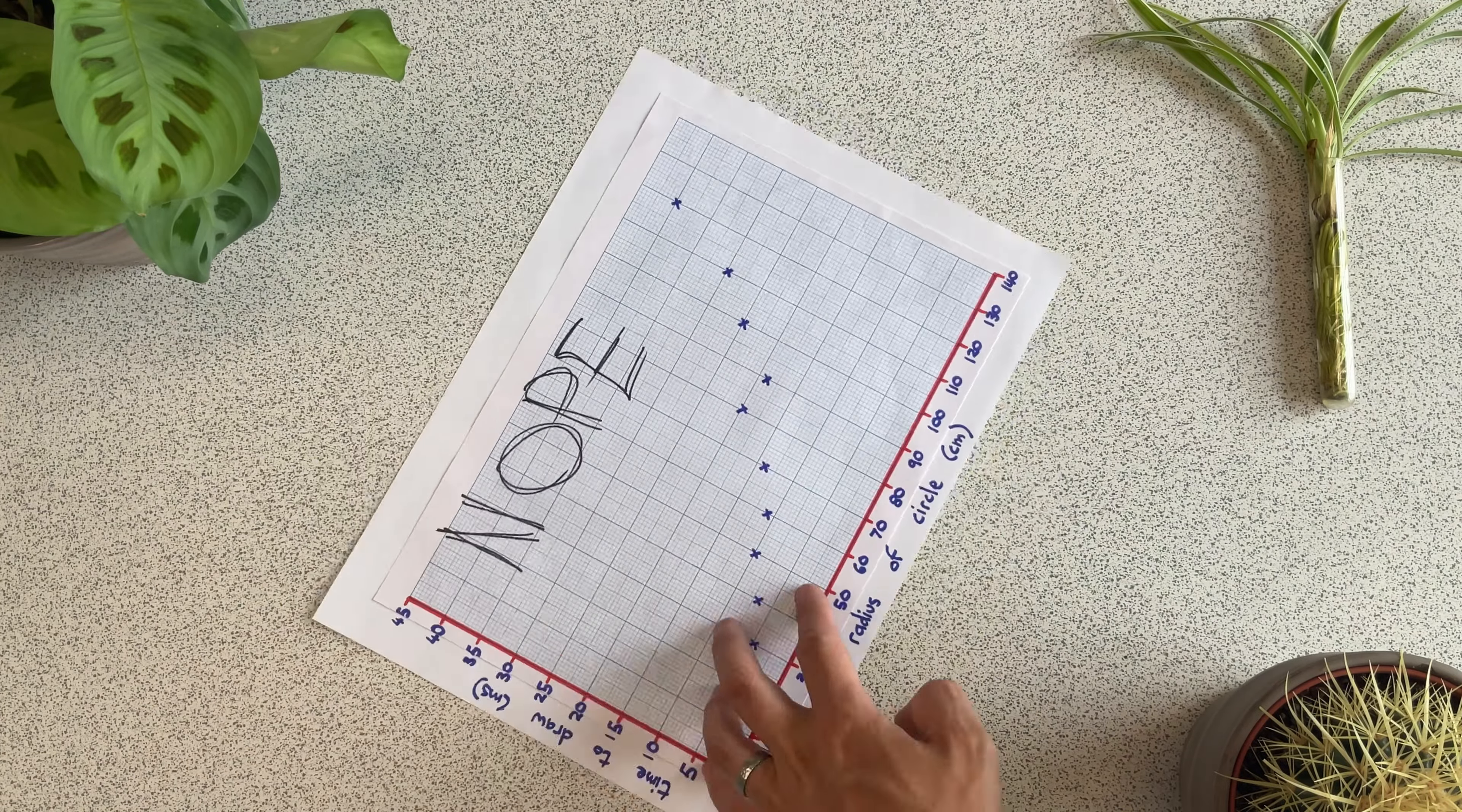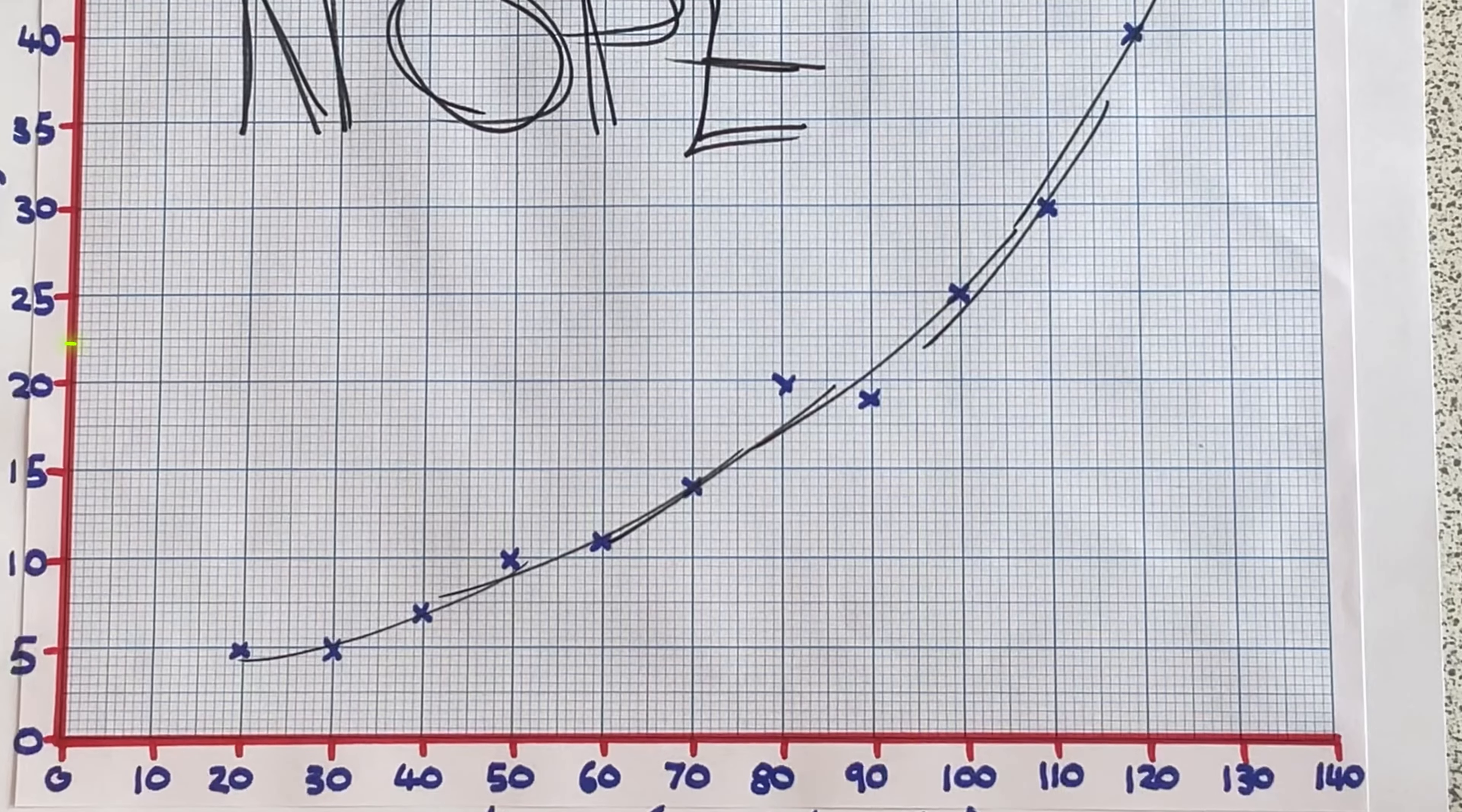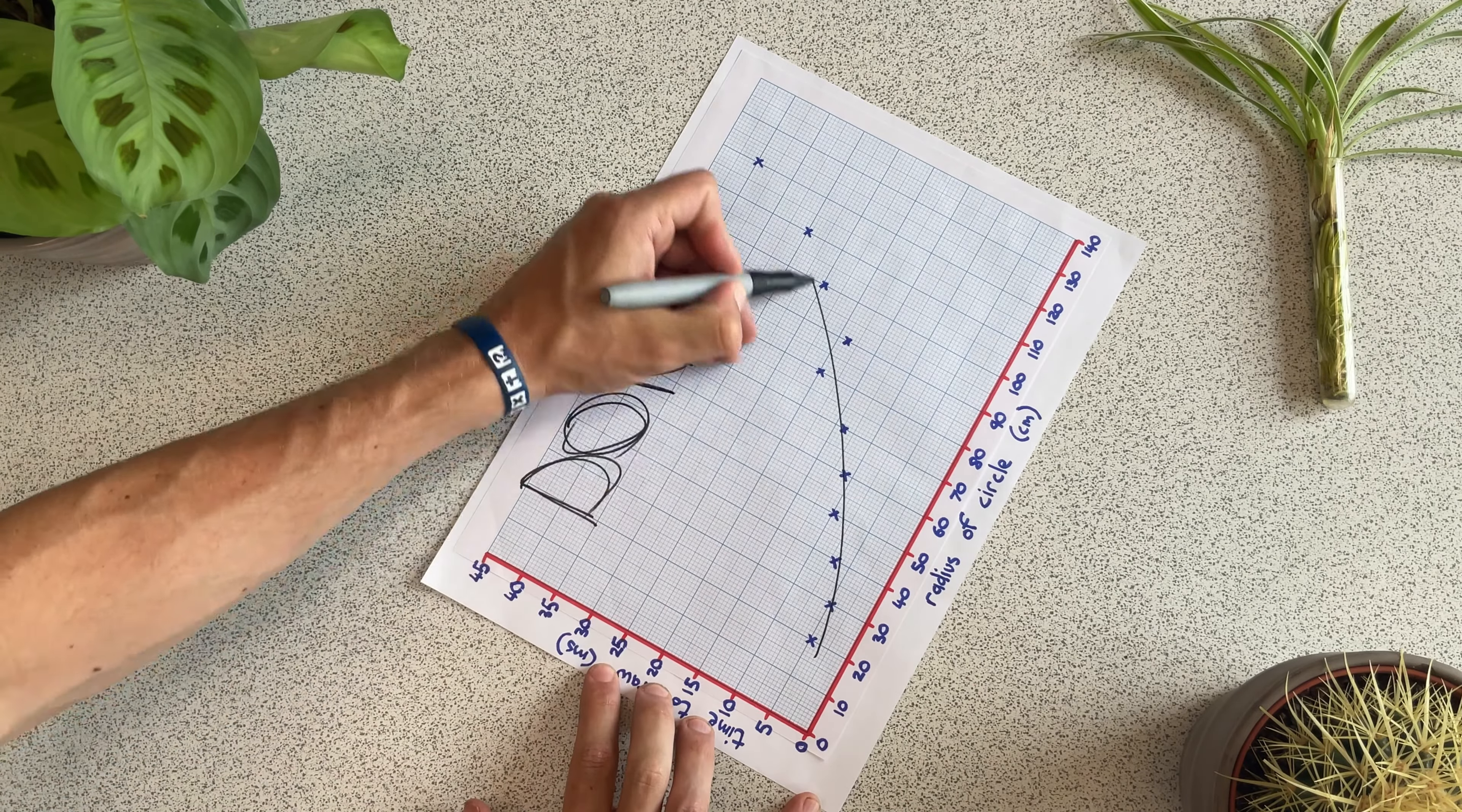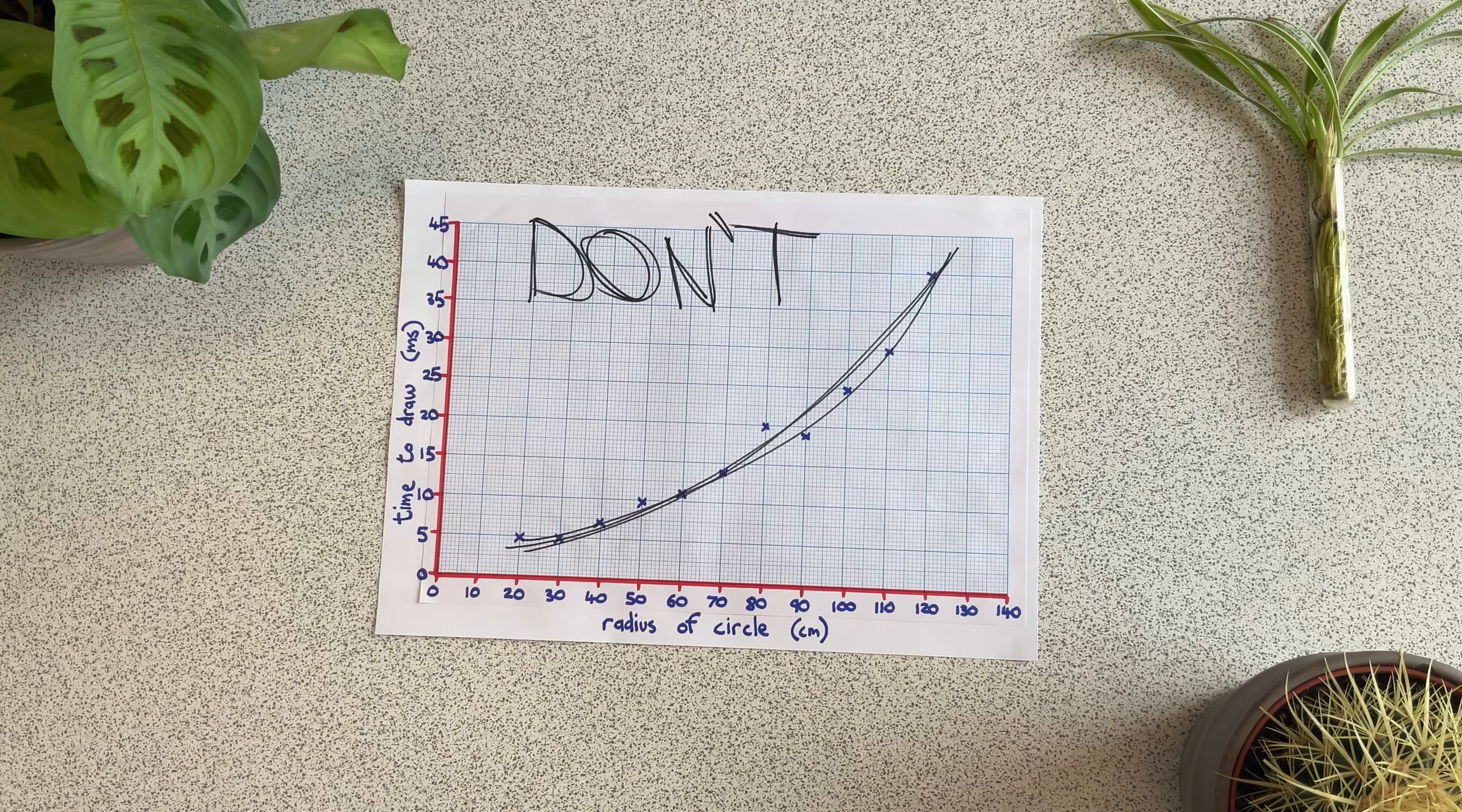If you draw your line of best fit in sections, it ends up looking wispy and has overlapping lines. And we've already seen why overlapping lines are bad. Some people don't like the line that they draw and then redraw it without rubbing out the first line. This leads to multiple lines that overlap. Overlapping lines is bad.